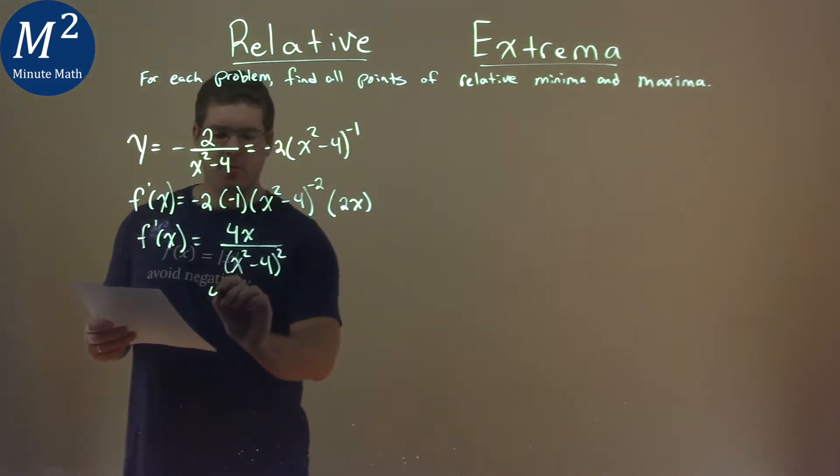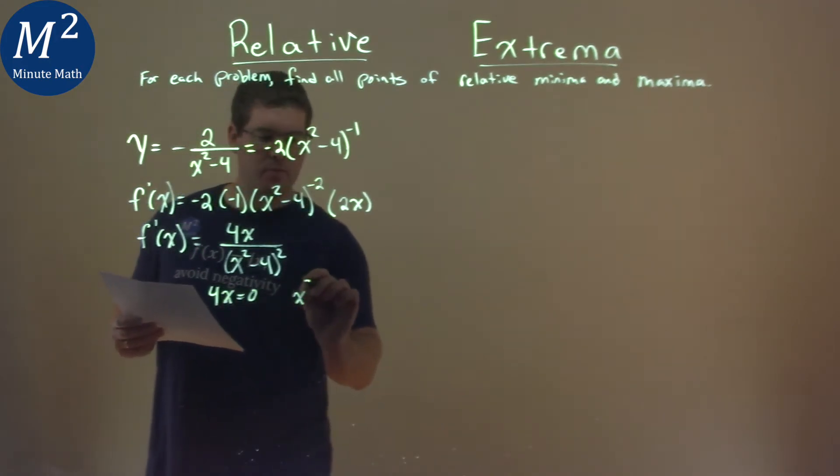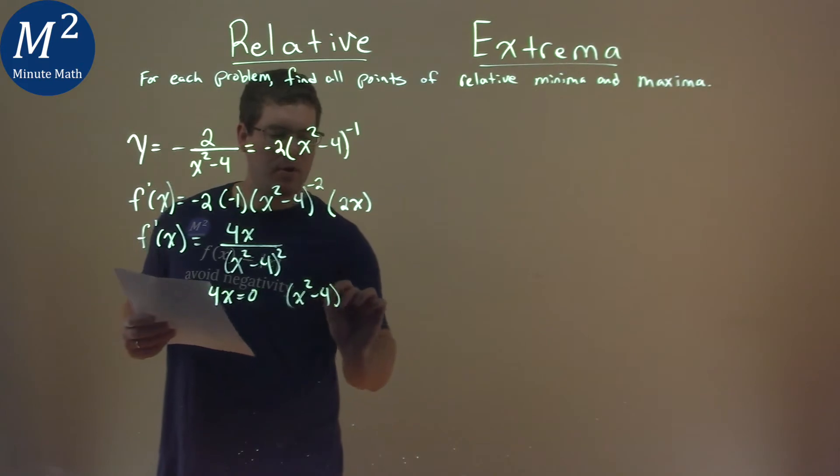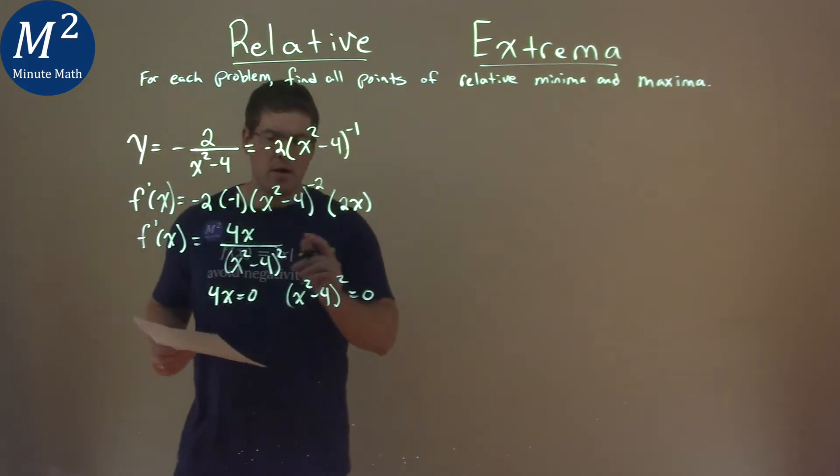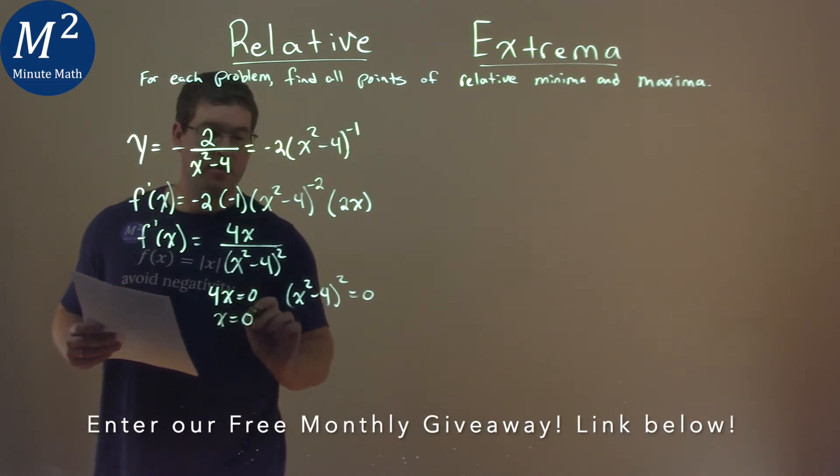So I set 4x equals 0 and x squared minus 4 all squared equals 0. We divide both sides by 4, and x equals 0 here.